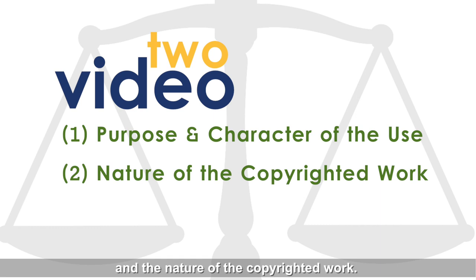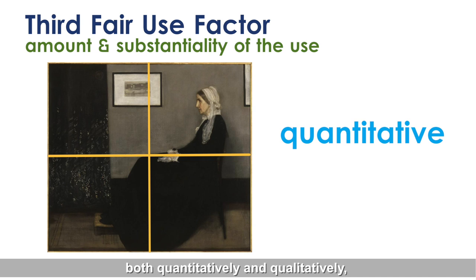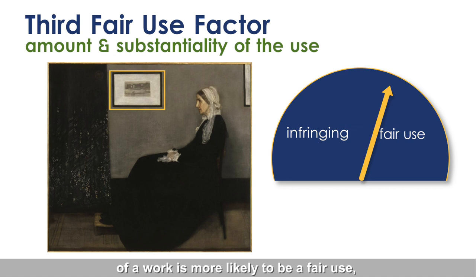Factor 3 considers the amount and substantiality of the use. This factor addresses how much of the protected work is being copied, both quantitatively and qualitatively, to achieve the intended purpose. Use of a whole work is rarely a fair use. By the same token, copying a small portion of a work is more likely to be a fair use, unless that portion is considered to be the heart of the work.